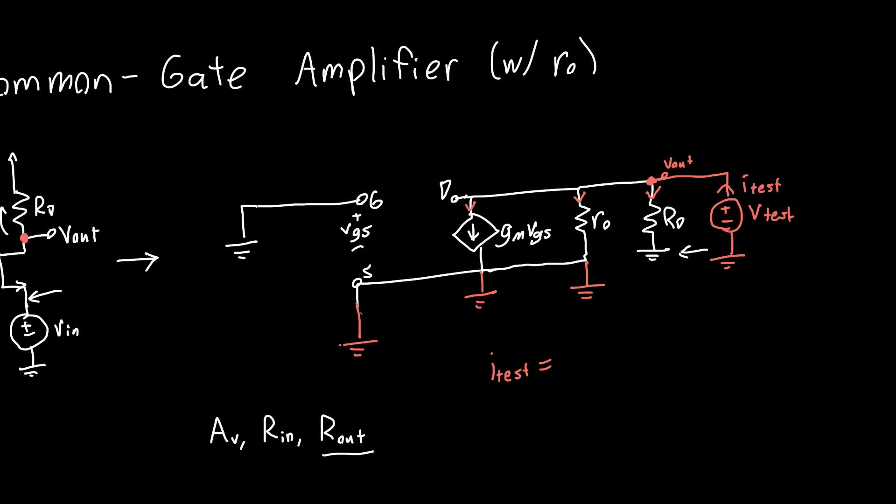It's the current flowing into this resistor, plus the current flowing into this resistor, plus the current flowing into this current source. The current flowing into a resistor is just the voltage, which is V test, divided by the resistance value. So, plus V test over RO, and then plus GM VGS.